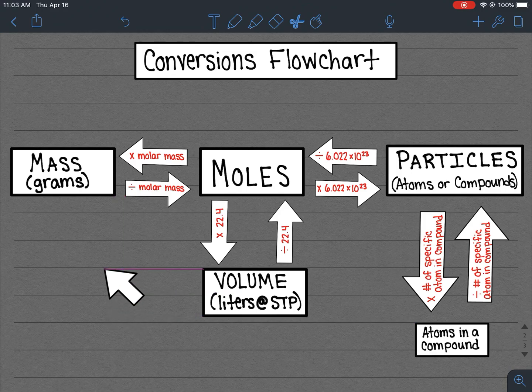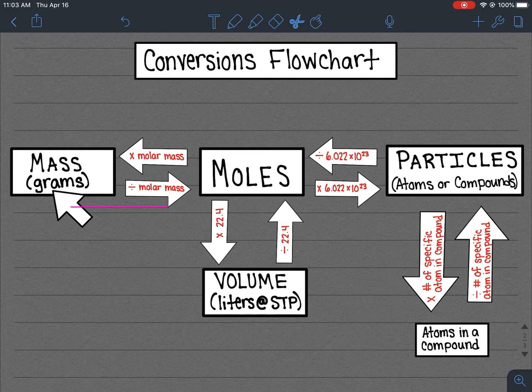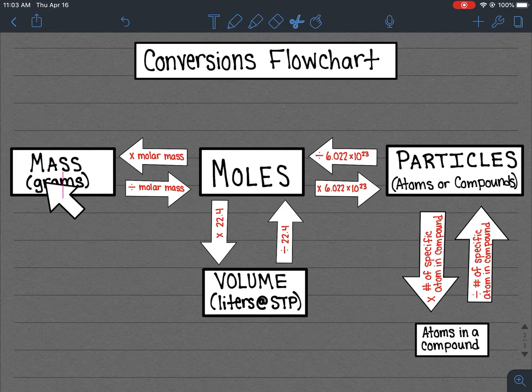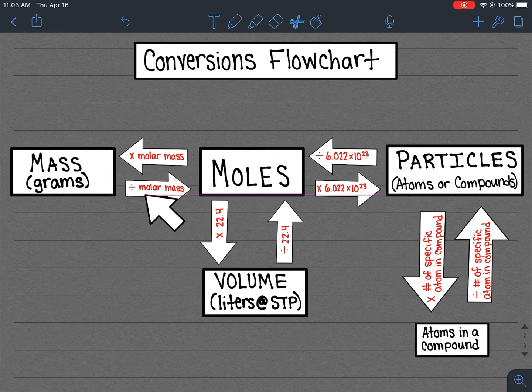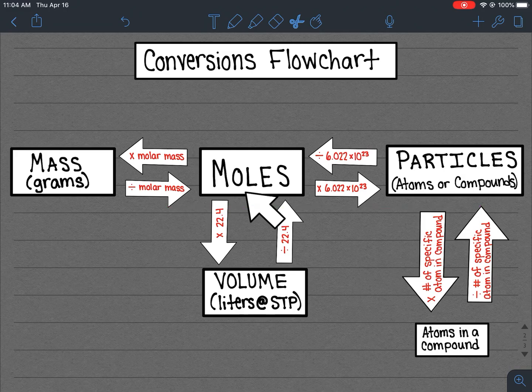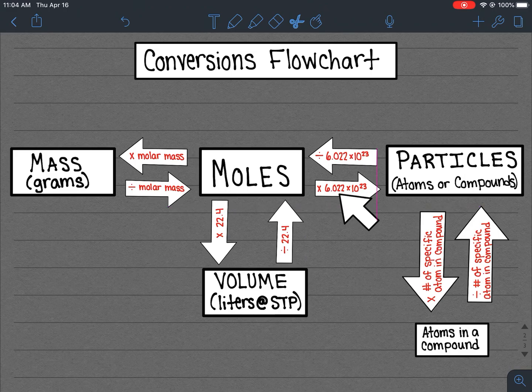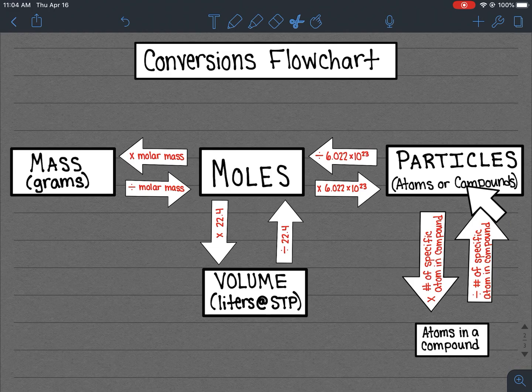What this can help you do, let's say a problem gives you mass in grams of a compound and wants to know how many compounds there actually is in that sample. So what you'll do is just follow the arrows. The mass in grams is what you'll start with. You'll divide by the molar mass of the compound and that will give you moles of the compound. And you're not done yet, so the next thing you'd have to do is multiply by Avogadro's number and then that final answer will give you the number of compounds.